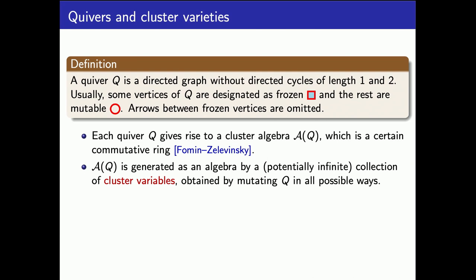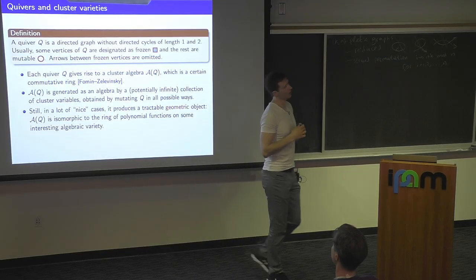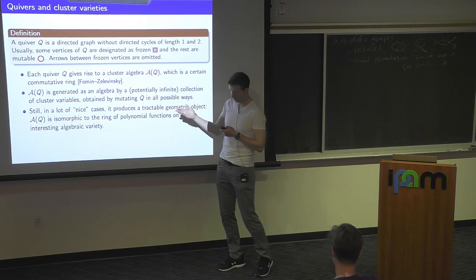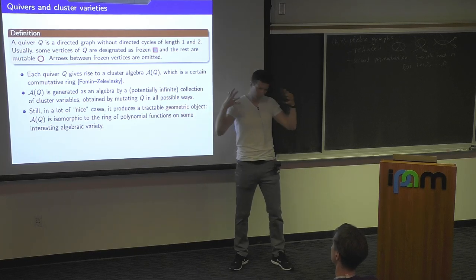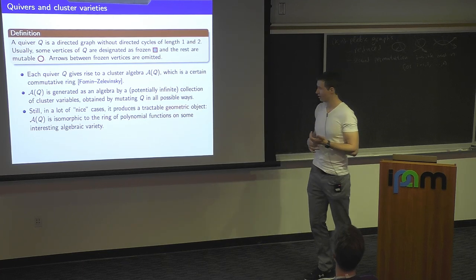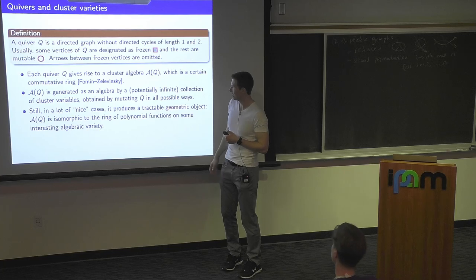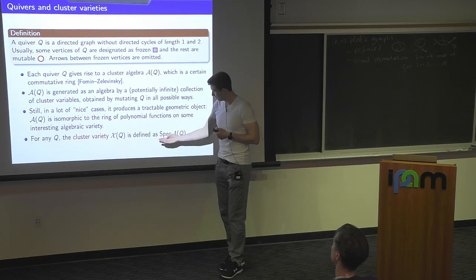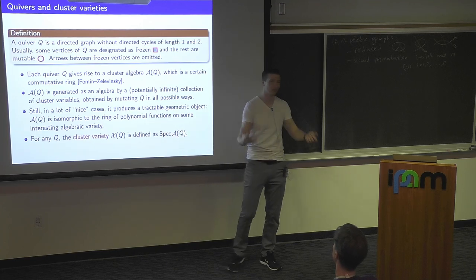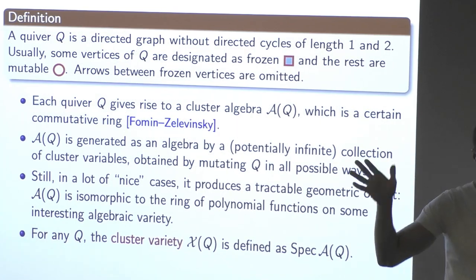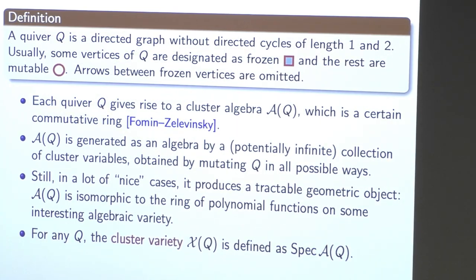If your quiver was nice in some sense, the cluster algebra you get has a geometric origin — it happens to be isomorphic to the algebra of polynomial functions on some algebraic variety. Even if your quiver is not nice, if you like algebraic geometry, to any commutative ring you can associate a scheme. You've probably heard that points of the variety correspond to maximal ideals or something like this. That's the kind of construction you can do for any quiver to get some geometric object.